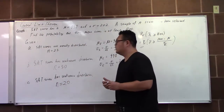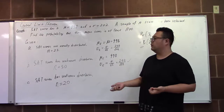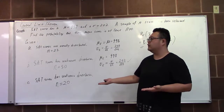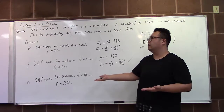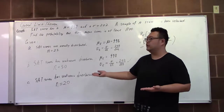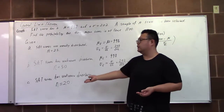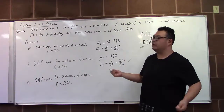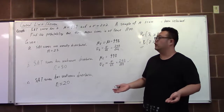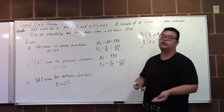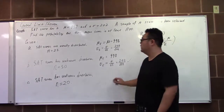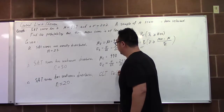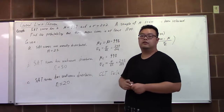The third case: we have an unknown distribution of the population, and the sample size n is less than 30 — in this case, n is 20. Then the sample mean cannot follow or be approximated by the normal distribution. The Central Limit Theorem cannot help us solve this question.